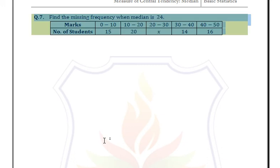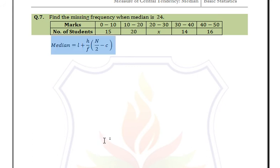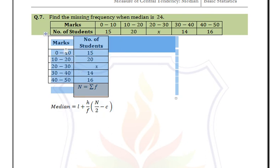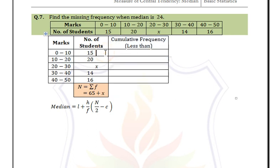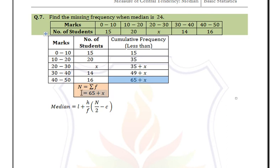Find the missing frequency when the median is 24. The class is already in exclusive form. Define the cumulative frequency in less than form. The first value is 15 (default), then 15 + 20 = 35, then 35 + X, making 35 + X + 14 = 49 + X.